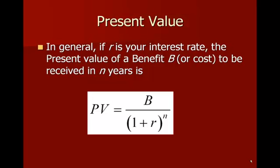And you take that denominator to the power N. So B divided by 1 plus R to the N gives us the present value.